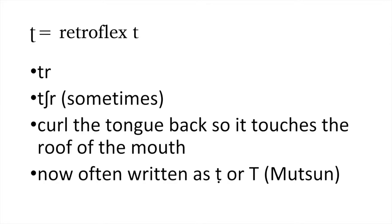So, now let's look at the retroflex T. So, when he writes it in his notes, it usually comes up as TR or T-shah-R. So, to make this sound, first of all, you have to curl your tongue all the way back. So, the tip of the tongue touches that ridge that comes out the top of your mouth. TR, TR, TR. It's really noisy. TR. And, it's used today. And nowadays, it's usually written as a T with a dot under it. Or, for Mutsun, they use a capital T.